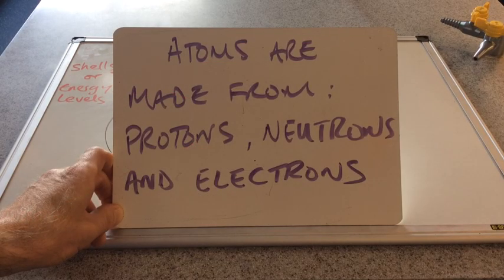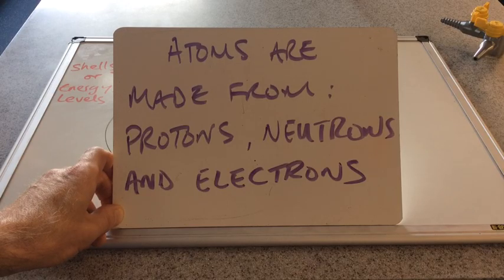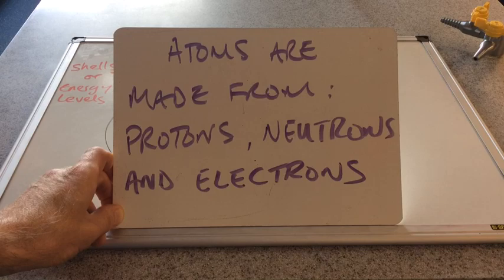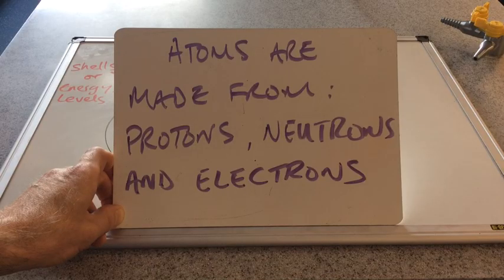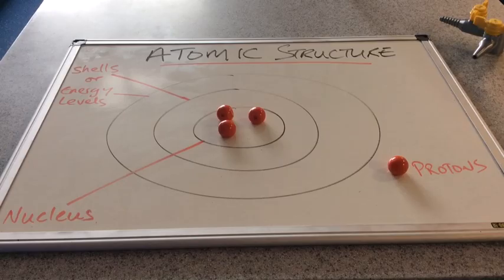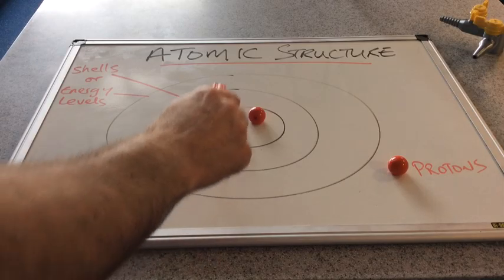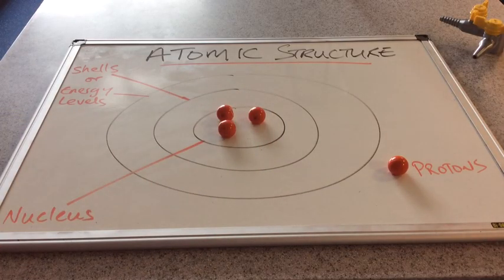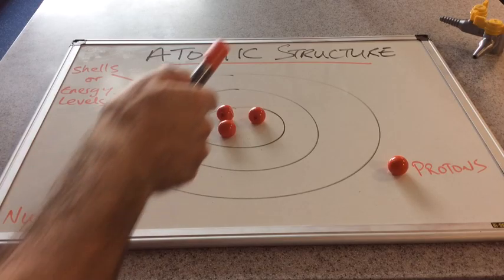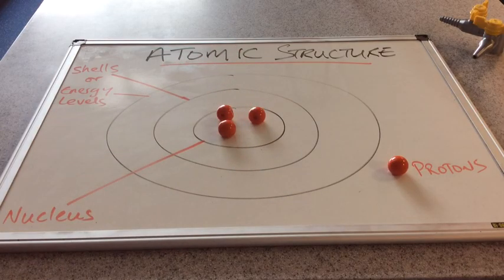Now I'm sure you already know this, but atoms are made from protons, neutrons and electrons. These are the three subatomic particles I was referring to at the start. Let's look at where they are in the atom. The first particle is the proton. I'm using these red spheres to represent the protons and I've put three protons in the nucleus of this atom. Protons live in the nucleus.